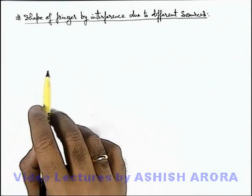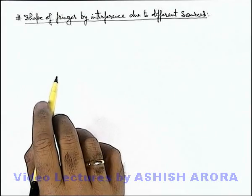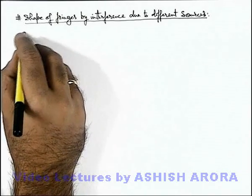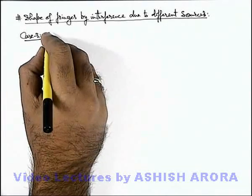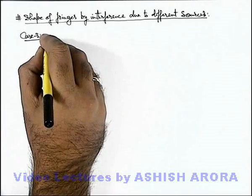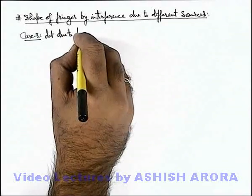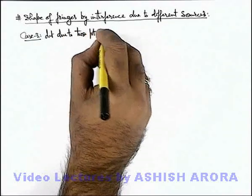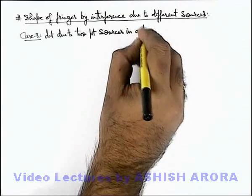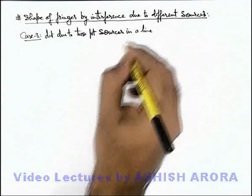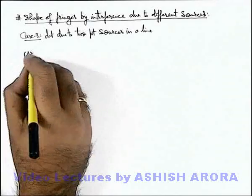Let us now discuss the shape of fringes by interference due to different sources. There are 2 cases we are going to study. Case 1: interference due to 2 point sources in a line. Here there are 2 situations we can consider.